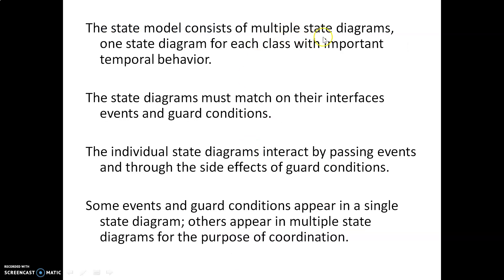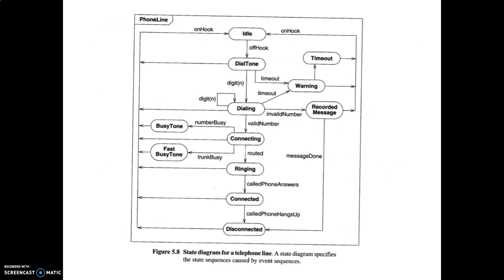The state model consists of multiple state diagrams — one state diagram for each class with important temporal behavior. One state model can have multiple state diagrams. The individual state diagrams interact by passing events and through the side effects of guard conditions. Some events and guard conditions appear in a single state diagram; others appear in multiple state diagrams for the purpose of coordination.